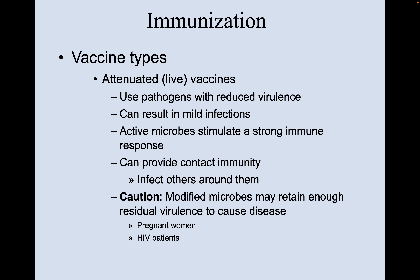There are a few different types of vaccines. The strongest are attenuated live vaccines, which use pathogens with reduced virulence. They can result in mild infection, but with active microbes they stimulate a strong immune response. They can also provide contact immunity — you might pass this attenuated pathogen to others, essentially vaccinating them. However, these modified microbes may retain enough residual virulence to cause disease, so people who are pregnant or severely immunocompromised are not necessarily a good fit.